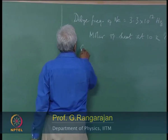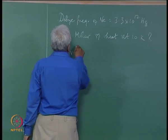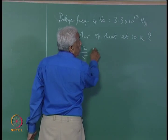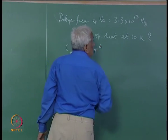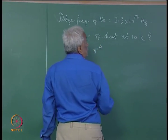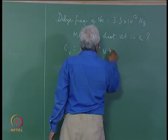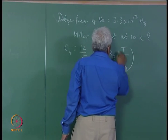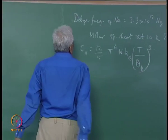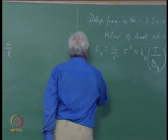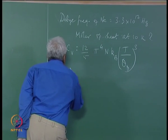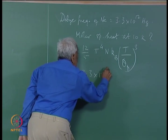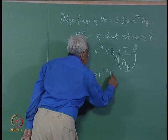We have the expression for C_v according to Debye theory: C_v = (12/5) π^4 N k_B (T/θ_D)^3. To calculate θ_D, we are given ν_D as 3.3 × 10^12 Hz.